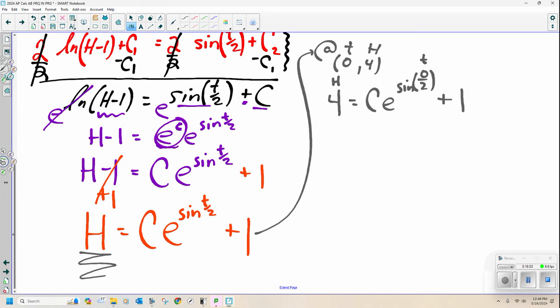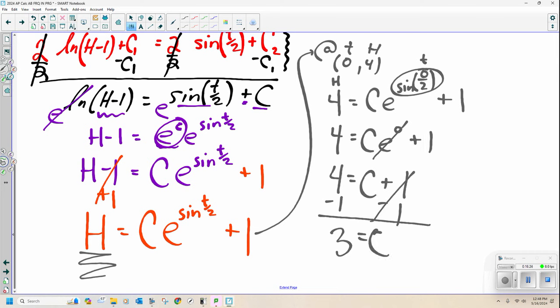All right. This is just the sine of 0. The sine of 0 is 0. Anything to the power of 0 is 1. So I really got c plus 1 equals 4. Okay? If I subtract 1 from both sides, I get 3 equals c. And that's what's going right back into here.